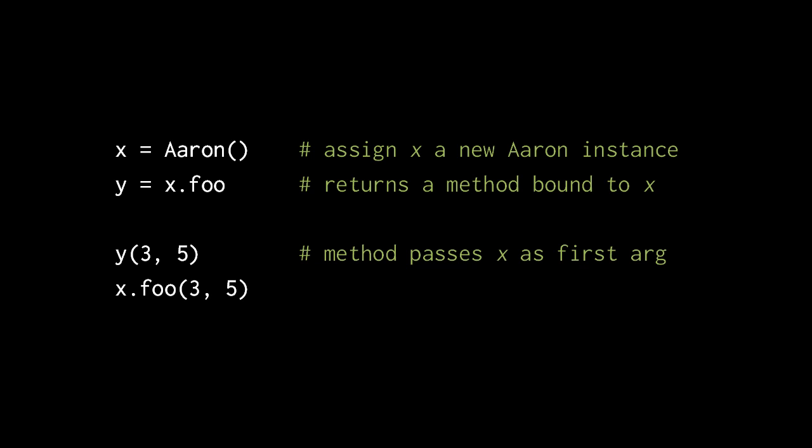So when you see in code what looks like a method call, say x.foo with the arguments 3 and 5, what's happening is the expression x.foo first returns a method object...